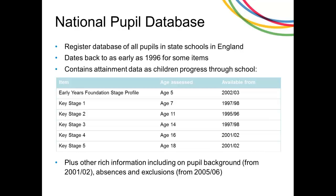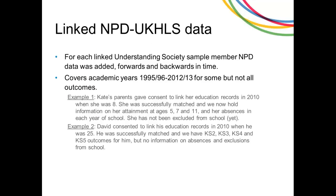The National Pupil Database also includes rich pupil background information such as free school meal eligibility and ethnic background — although once linked to Understanding Society, the ethnic background information may be less valuable since Understanding Society has very detailed ethnic categories of its own. Quite interesting are also absences and temporary exclusions from school, including all reasons and numbers of sessions missed. We have added NPD data for each linked individual both backwards and forwards in time, using all available years from 1995 up to the most recent academic year at the time of linkage, which was 2012-13.